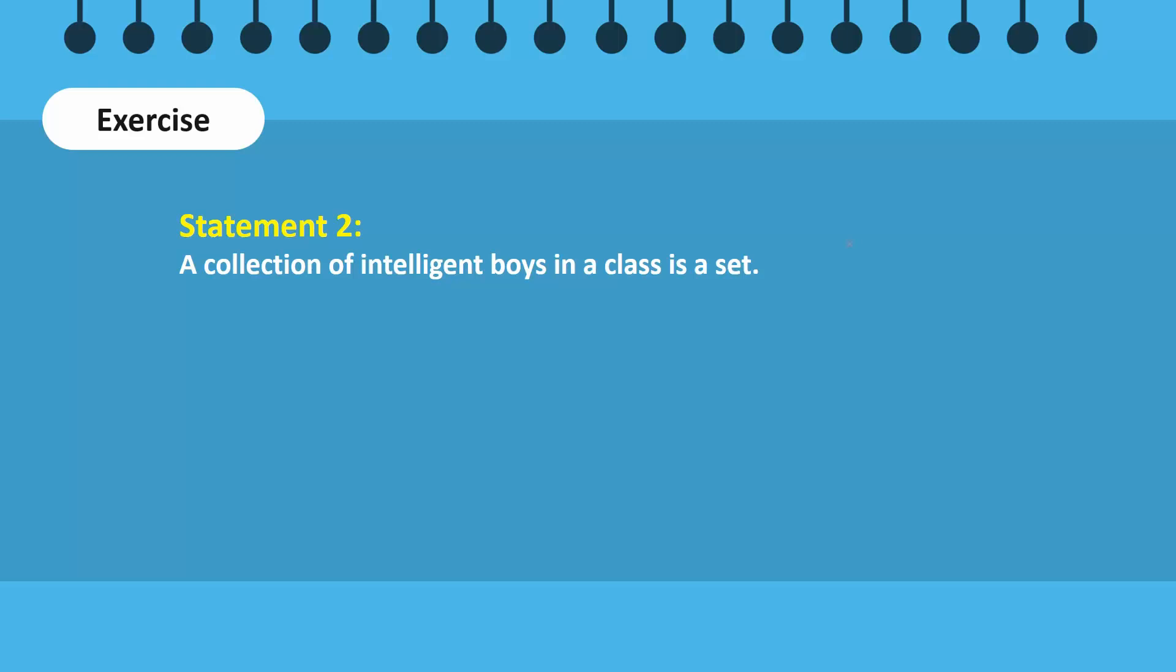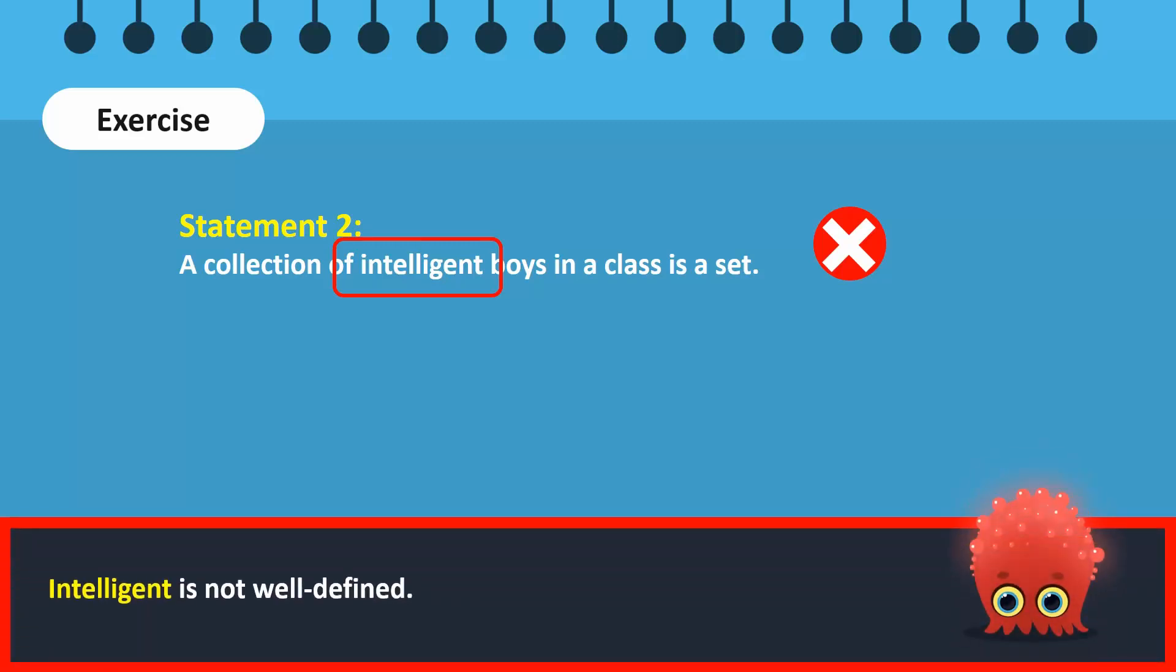Moving on, a collection of intelligent boys in a class does not form a set. Similar to the collection of beautiful flowers, intelligent is a word that is subjective and not well-defined. Is a boy considered intelligent if he scores grade A, or grade B, or grade C? To make this a set, we can remove the word intelligent, so a collection of boys in a class is a set. Or we can change intelligent to something more well-defined, such as a collection of boys in a class who score above 80 percent. This will also be a set.